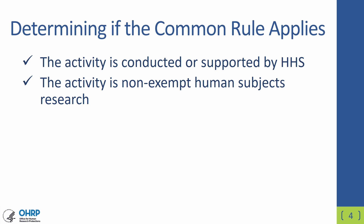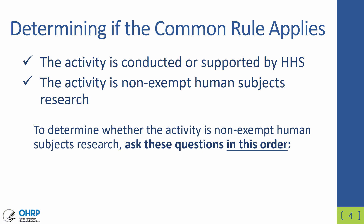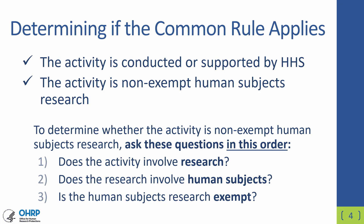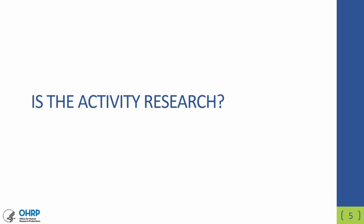When you need to determine whether the Common Rule applies to a specific activity, first verify the funding source. If it is conducted or supported by HHS or another applicable agency, then move on to determining whether the activity is considered to be non-exempt human subject research. To decide this, you should ask the following three questions in this order: Does the activity involve research based on the regulatory definition? Does the research involve human subjects based on the regulatory definition? And is the human subjects research exempt?